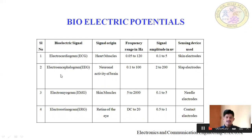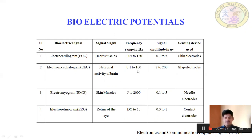Next, we have one more bioelectric signal — that is the electroencephalogram, in short EEG. It is generated by the neural activity of the brain; the brain has neurons and that neuron activity is recorded as EEG. It has a frequency ranging from 0.1 to 100 hertz and amplitude of 2 to 200 microvolts. Normally it uses a skin electrode, needle electrode, or slab electrodes.